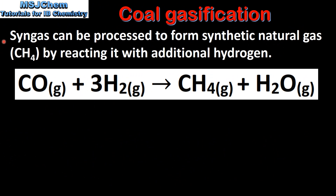Syngas can be processed to form synthetic natural gas by reacting it with additional hydrogen. In this reaction, carbon monoxide is reacted with hydrogen to form synthetic natural gas, which is methane, and steam.